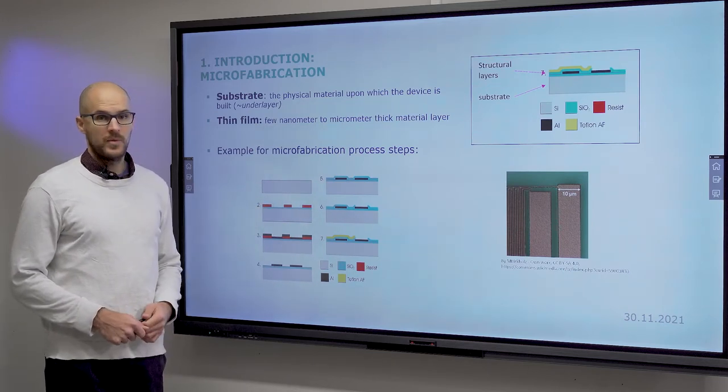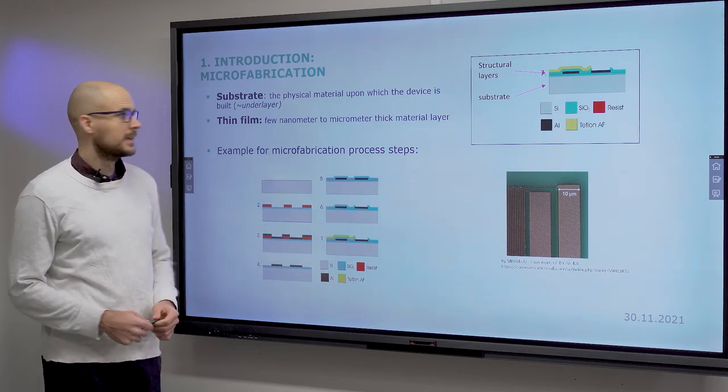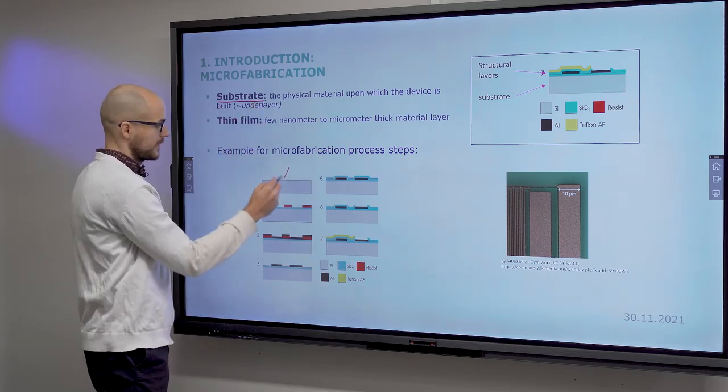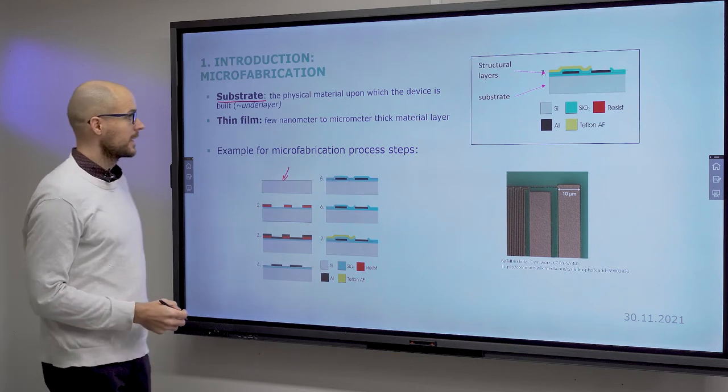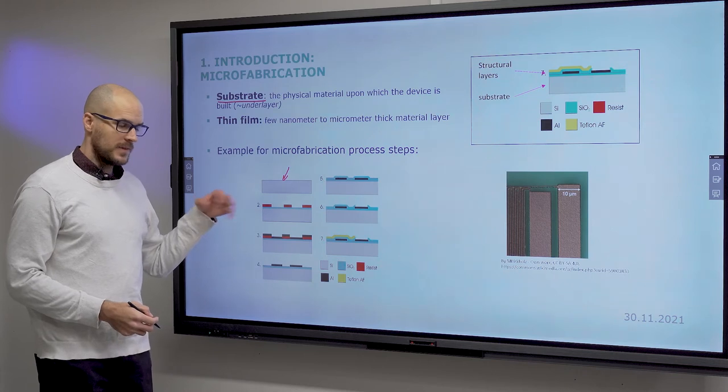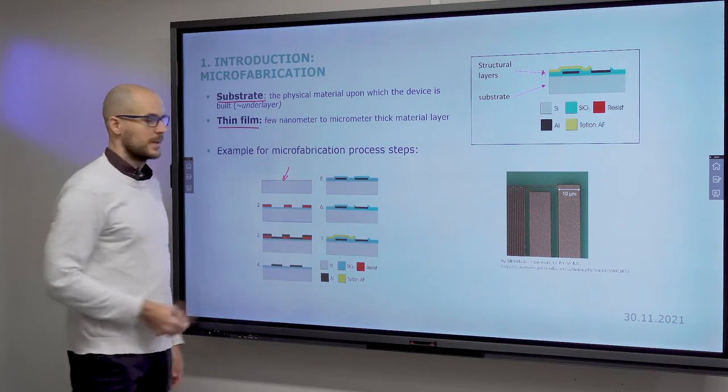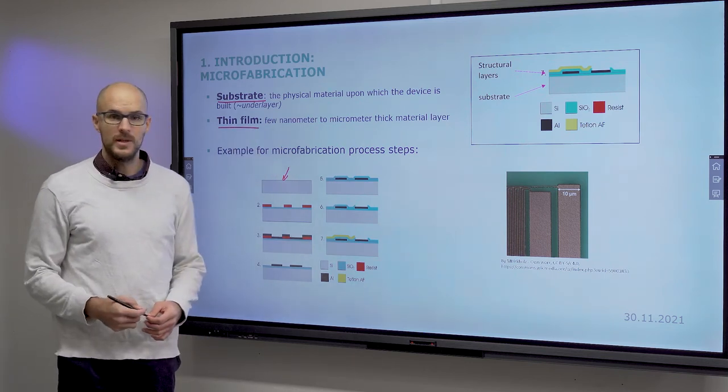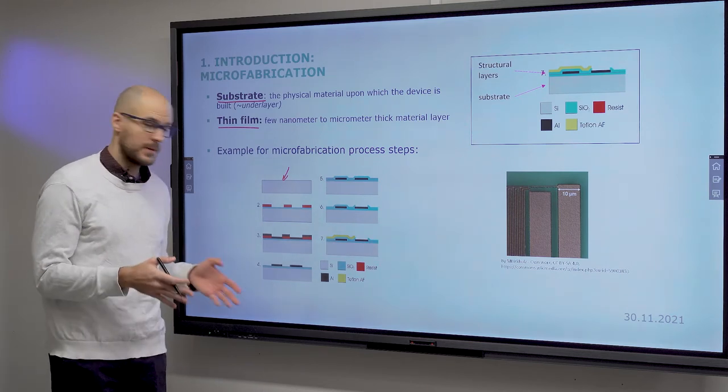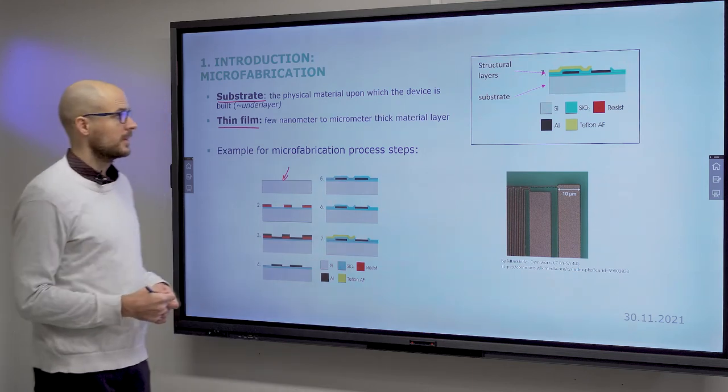This one is an example of a microfabrication process. You will see this often if you go to this field. You start with a substrate, substrate being in this case silicon. And then the process description tells you how these layers are built up. The layers themselves are thin films, which are a few nanometers to a few micrometers thick. These are material layers, different materials, whatever they may be. We will talk about the processes in the next video.